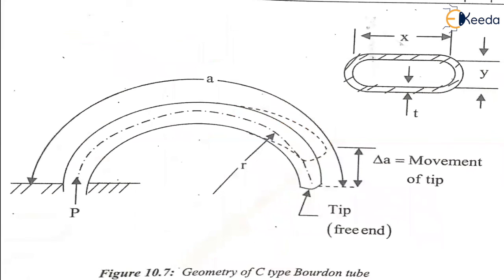This is the original position; when I apply pressure, the displacement of the tip changes from here to here — that is delta. The formula for that was given in the first slide on the bourdon tube. The cross section — that is the x and y elliptical cross section — is shown here. This is the general geometric figure of the bourdon tube depicted in detail.